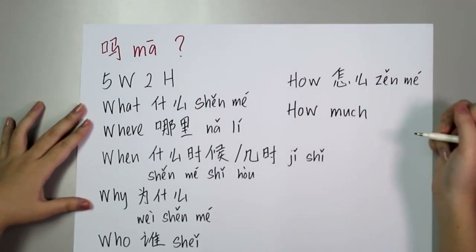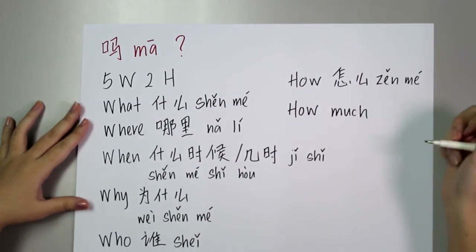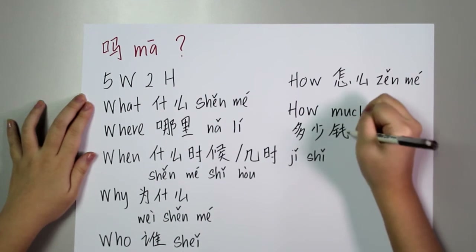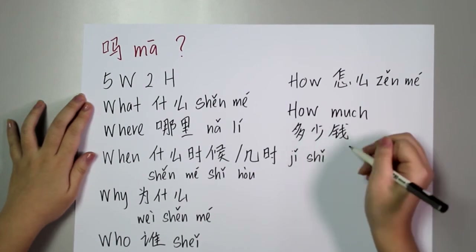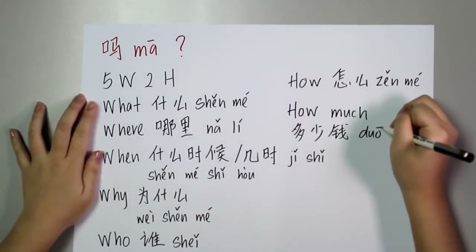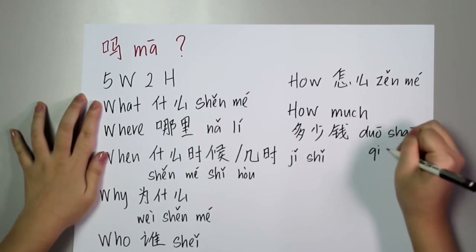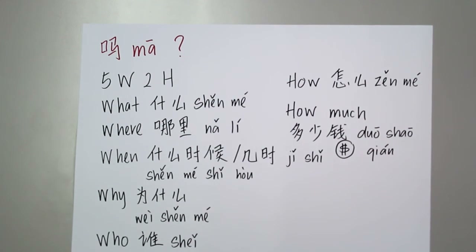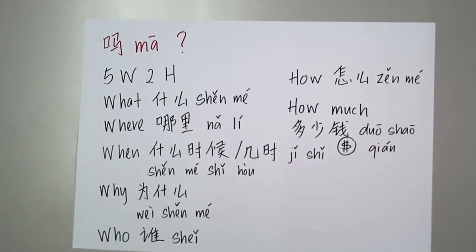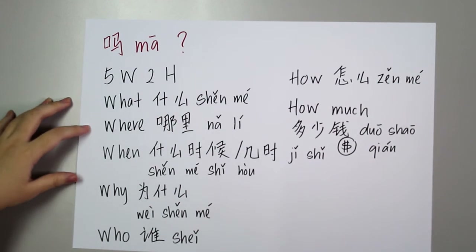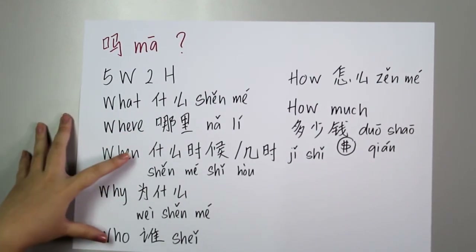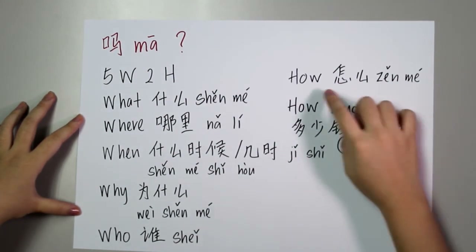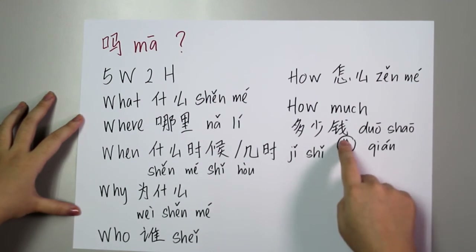The second H is 'how much.' When you buy something, you ask 多少钱. 多少 means 'how much' and 钱 represents money. So 多少钱 means 'how much does it cost?' Let's revise the five W and two H: what is 什么, where is 哪里, when is 什么时候 or 几时, why is 为什么, who is 谁, how is 怎么, how much is 多少钱.